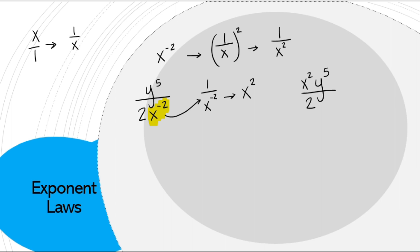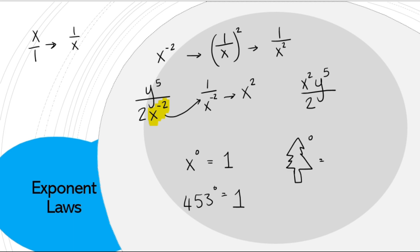The last exponent law to mention: what if the exponent is 0? No matter what your base is, if it's to the power of 0, it's equivalent to 1. So 453 to the power of 0 equals 1. It could be a Christmas tree to the power of 0 — it's still going to be 1.